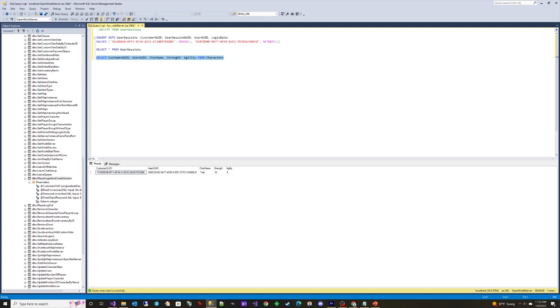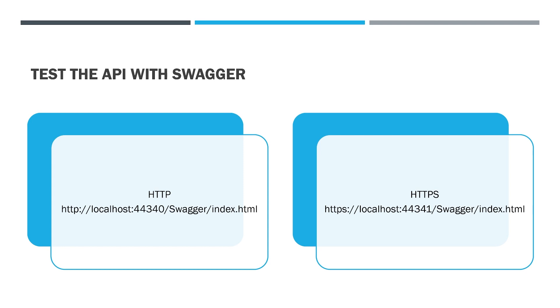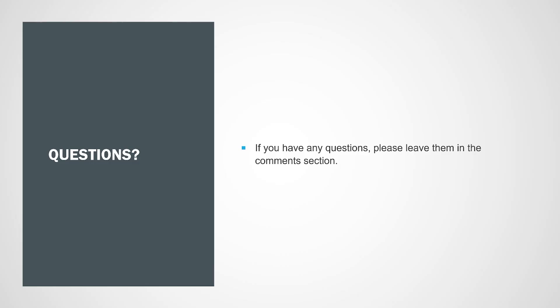When we test from Swagger, we can use either the HTTP or HTTPS endpoint — notice that one is at port 44340 and the other is 44341. We're going to conclude part two here. In part three, we will be adding code to our C++ project in Unreal Engine to call this API, and we'll add a UI with sliders or something to be able to send those values for strength and agility during the character creation process. If you have any questions, please leave them in the comments section. Until next time, have a good one.